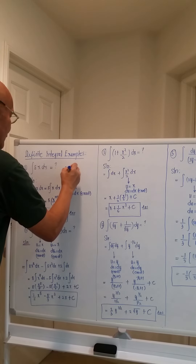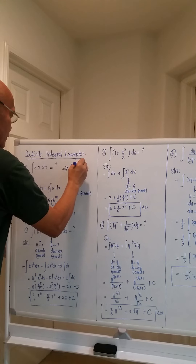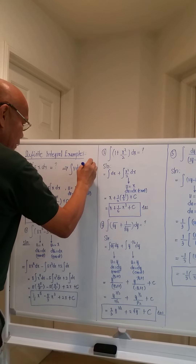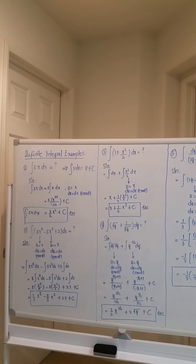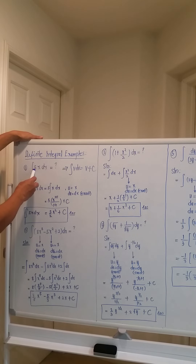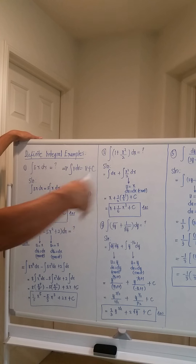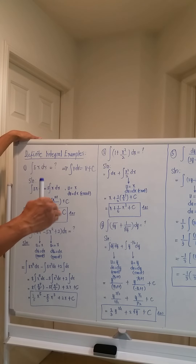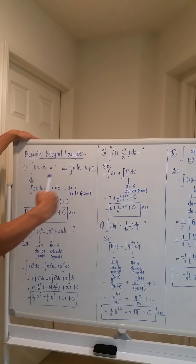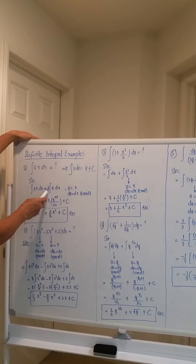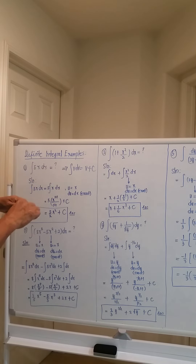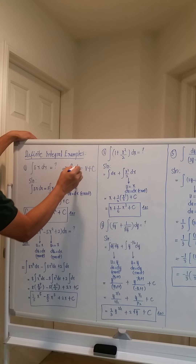It falls under the power formula. This is a constant times a function. Just as in differentiation, where we differentiate a constant times a function by bringing out that constant, in integration it's the same — you bring out the 5 from the integral sign. So it will now become equal to 5 times the integral of x dx. We must verify this dx here.